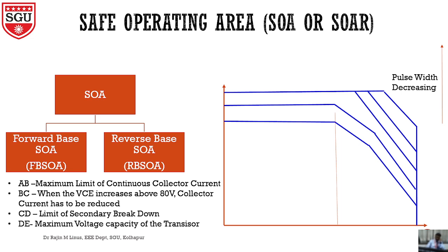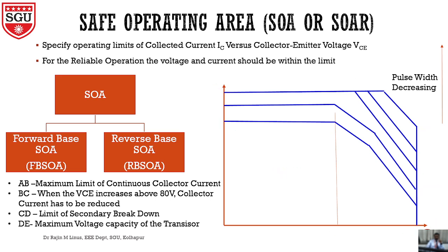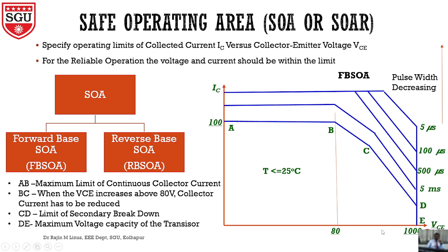We normally call it SOA — safe operating area. Why is the safe operating area important? If you take a plot where the y-axis is collector current and the x-axis is voltage across collector to emitter, in ideal cases it would be a square. But in practice, we cannot simultaneously have maximum collector current and maximum collector-emitter voltage — there are limitations. That area within those limits is called the safe operating area. The safe operating area is a specific operating limit within which we operate with maximum collector current with respect to collector-emitter voltage.